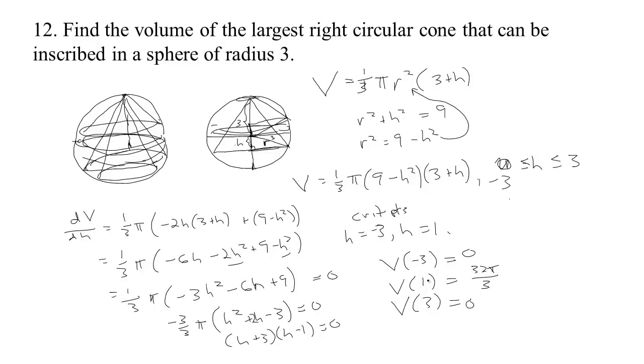So, we have two end points and a critical point in between. We know it's a continuous function on closed bounded intervals. So, we know that the max has to be one of these. Obviously, it's this. There's our max. So, we want to find the volume of the largest right circular cone that can be inscribed in the sphere of radius 3. This is the volume of the largest cone. So, 32π over 3.